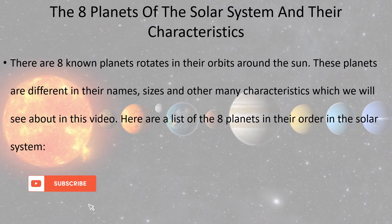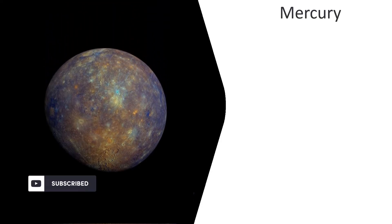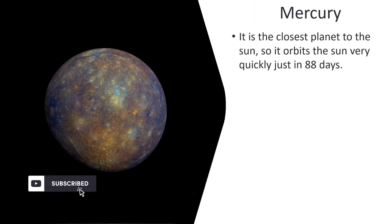The eight planets of the solar system and their characteristics. There are eight known planets that rotate in their orbits around the Sun. These planets are different in their names, sizes, and many other characteristics which we will see in this video. Here is a list of the eight planets in their order in the solar system.